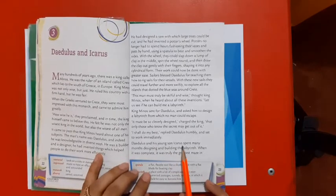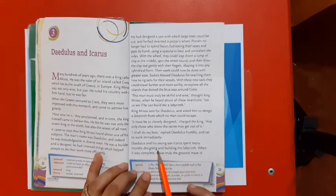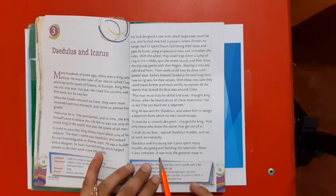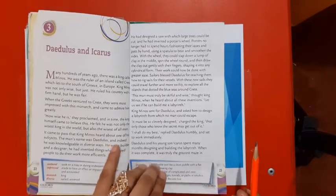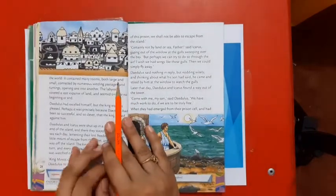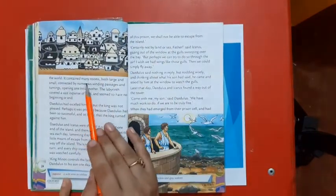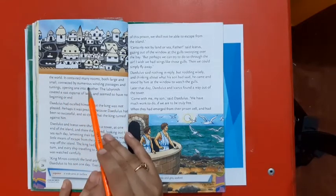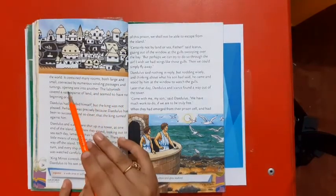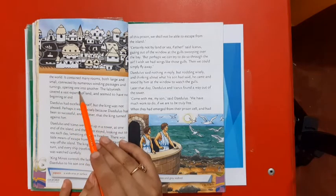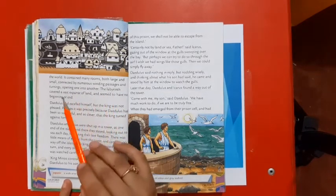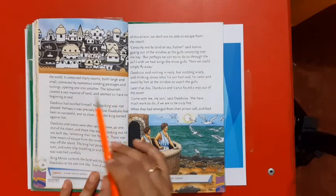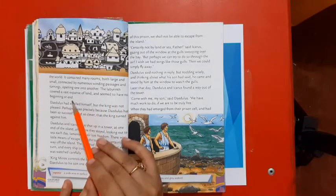Daedalus and his young son Icarus spent many months designing and building the labyrinth. When it was complete, it was truly the greatest maze in the world. It contained many rooms, both large and small, connected by numerous winding passages and turnings opening one into another. The labyrinth covered a vast expanse of land and seemed to have no beginning or end.